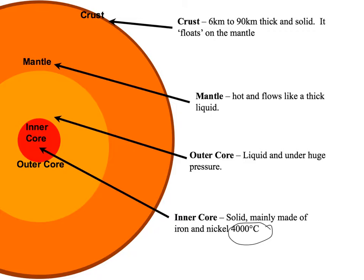The outer core is a liquid, and it is under huge pressure — it's got all the weight of the mantle and the crust on top of it. The mantle is extremely hot and it flows like a very thick liquid. It's almost solid, but not quite — it's a very thick liquid.